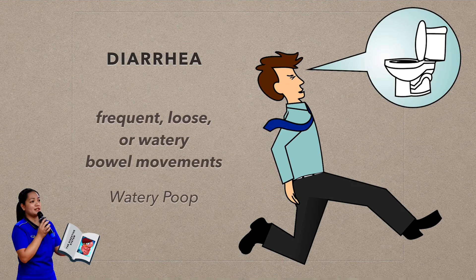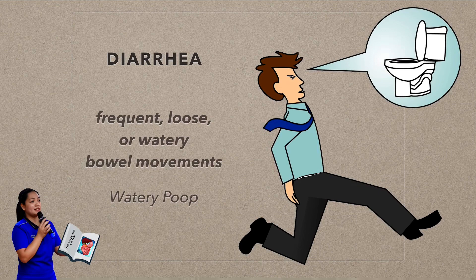Acute diarrhea is fairly common and it occurs when the condition lasts for one to two days. You might experience diarrhea as a result of a viral or bacterial infection; other times it could be due to food poisoning. There is even a condition known as traveler's diarrhea, which happens when you have diarrhea after being exposed to bacteria or parasites while on vacation in a developing nation.